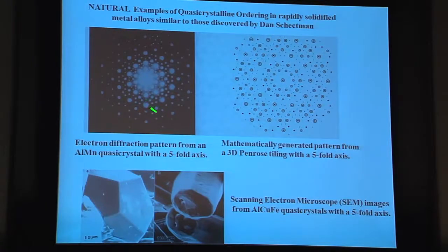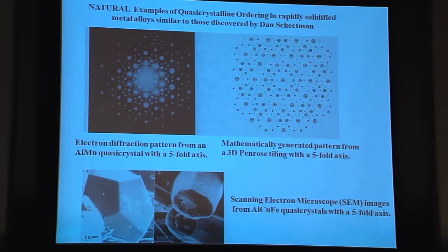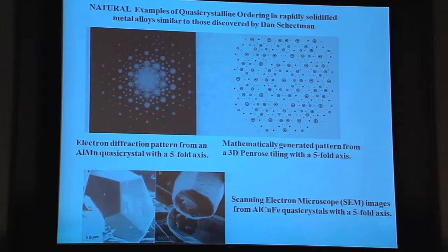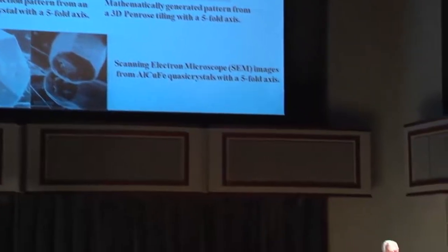What Schechtman found was that in certain alloys — aluminum manganese was the one he made the discovery with — he got electron diffraction patterns showing ten spots around a ring, that's five in the plus and minus direction, coming from some kind of five-fold rotational symmetry. We can mathematically generate that same type of pattern from the Penrose tile. You can also grow small crystals of this material that have pentagonal facets — icosahedrons. This isn't supposed to be possible, because we know that crystals have repeating periodicity with unit cells repeating one after the other to fill space.